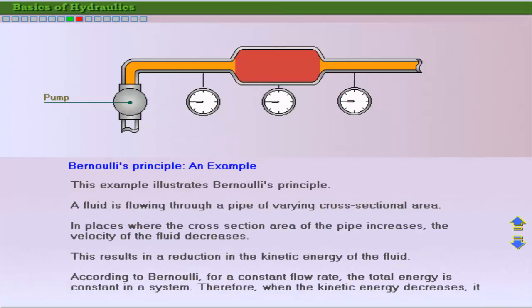Here's an illustration of Bernoulli's principle. In this system, fluid is flowing in a pipe of varying cross-sectional area. In regions where the cross-sectional area is greater, the fluid's velocity decreases. As a result, the kinetic energy of the fluid is reduced. This results in an increase in the potential energy, as stated by Bernoulli's principle. This fact is indicated by the increase in pressure in this area.